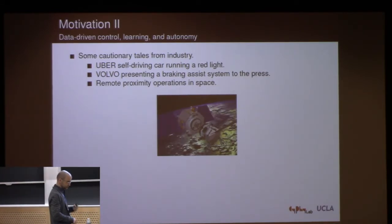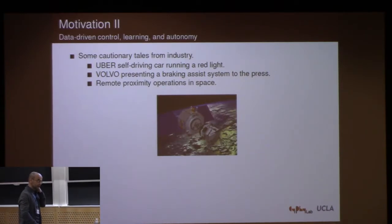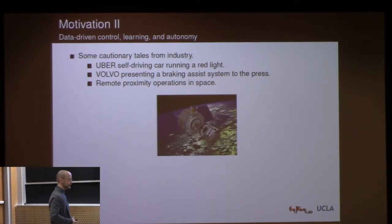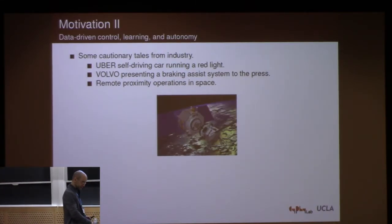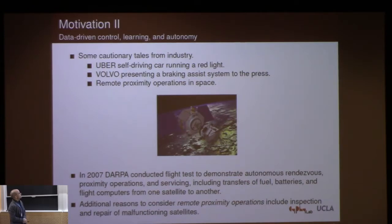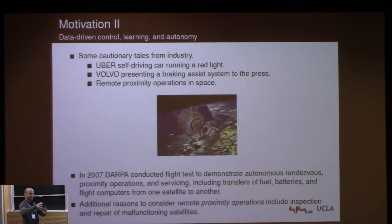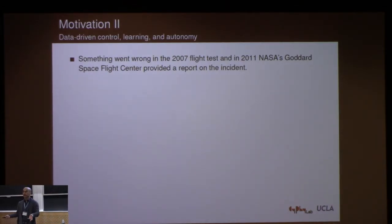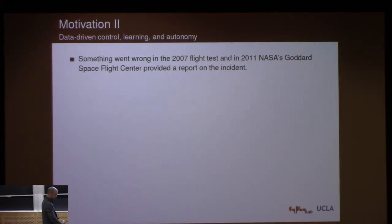I'll talk about another example I have some experience with. I was doing work for a defense contractor, and they told me they wanted formal guarantees on code implementing things on a satellite, making sure none of the failures we saw before would occur. They pointed me to a report detailing what happened in a DARPA study. In 2007, DARPA conducted a flight test where they sent a small satellite to dock on a larger one, studying the feasibility of delivering materials, doing inspections, and doing repairs on the outside of an older satellite.